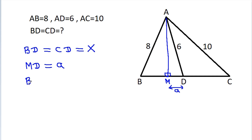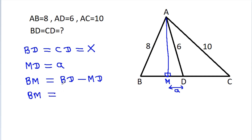And BM, it will be equal to BD minus MD. So BM is equal to BD which is X minus MD which is A, so BM is X minus A.